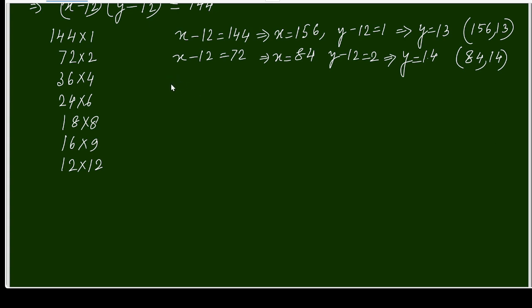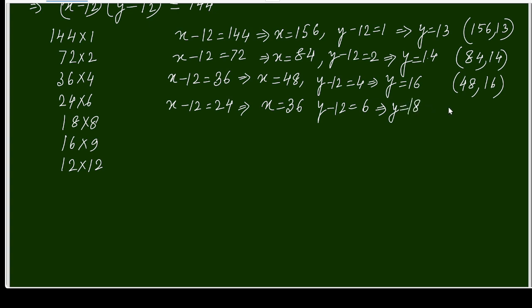Coming to third one, x minus 12 equals 36, so x equals 48. And y minus 12 equals 4, so y equals 16. The pair is now 48 and 16. For the next one, x minus 12 equals 24, then x is equal to 36. And y minus 12 equals 6, so y is equal to 18. So we are getting 36 and 18.